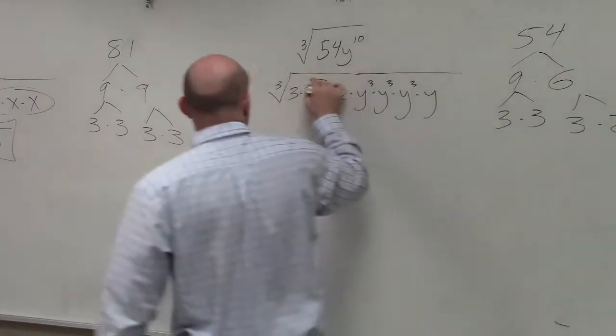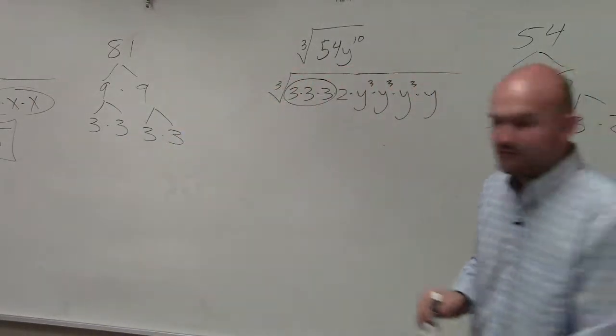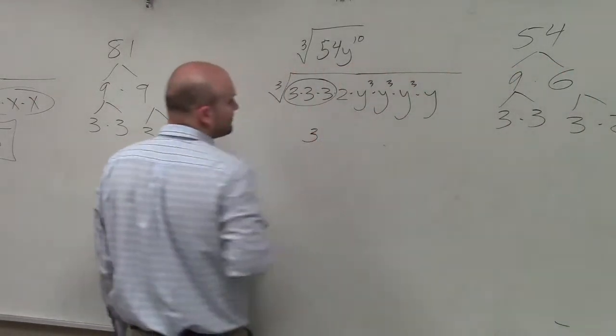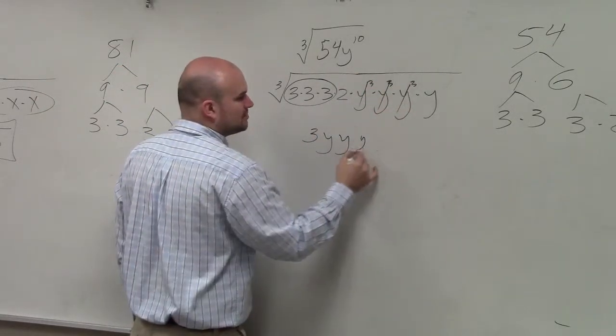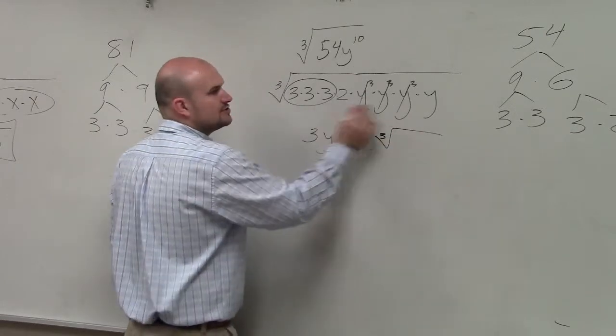And I can group these three together. So the cube root of 3 times 3 times 3 is just 3. The cube root of y cubed is y, y cubed is y, y cubed is y. And what's left under there? 2 and a y.